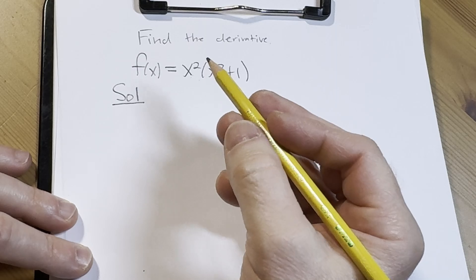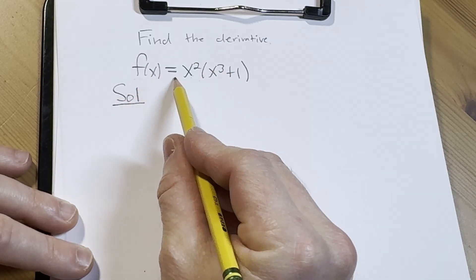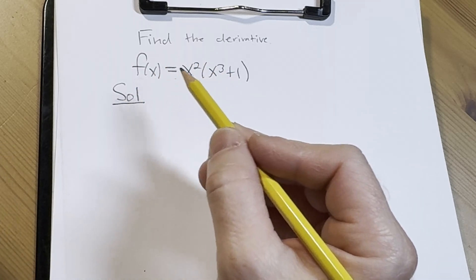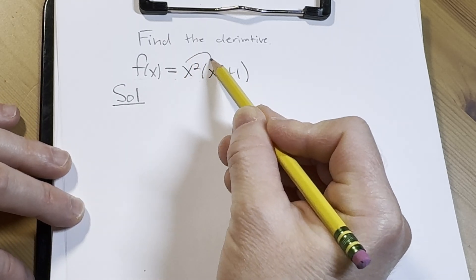Solution. So our first step is going to be to rewrite our original function in a way that allows us to differentiate more easily. And again, distributing is going to allow us to do that.